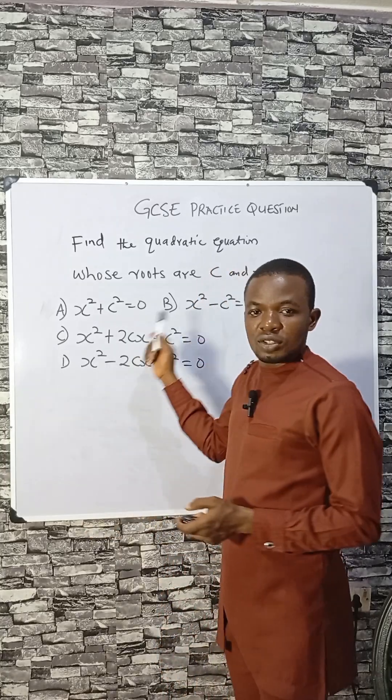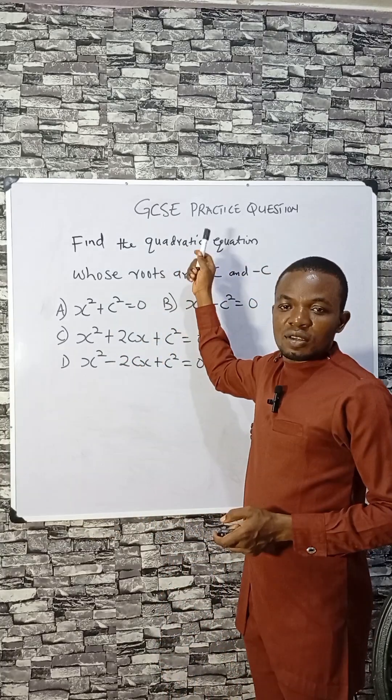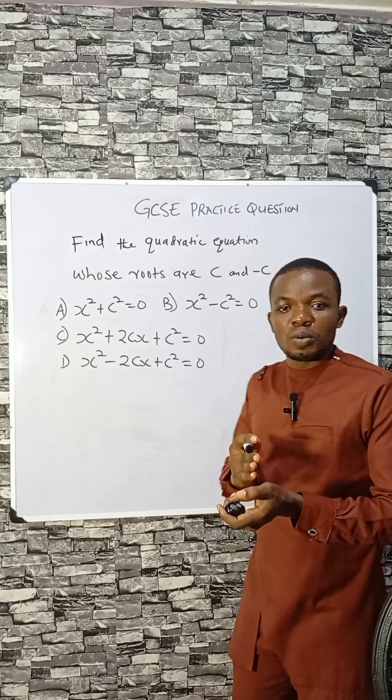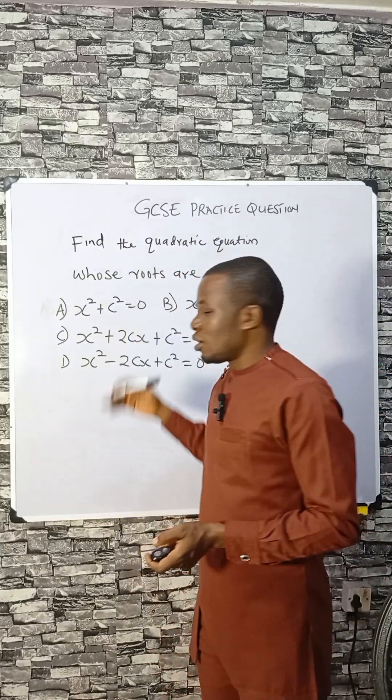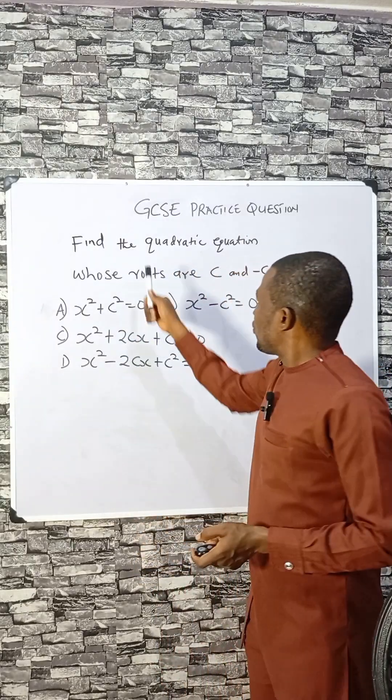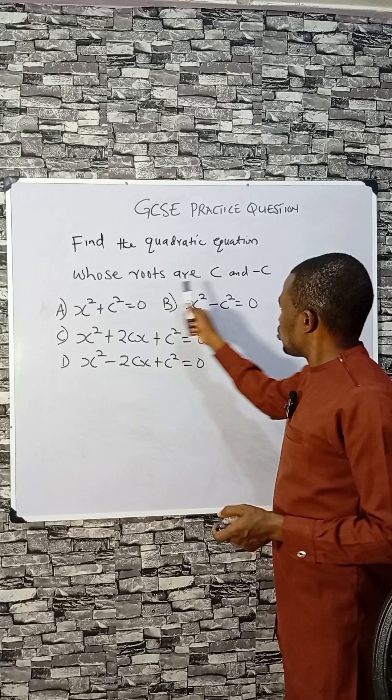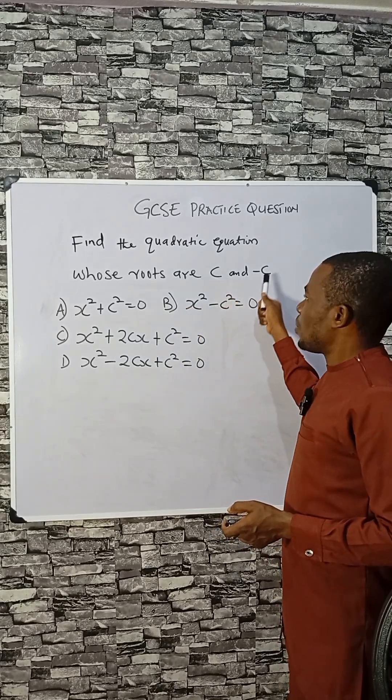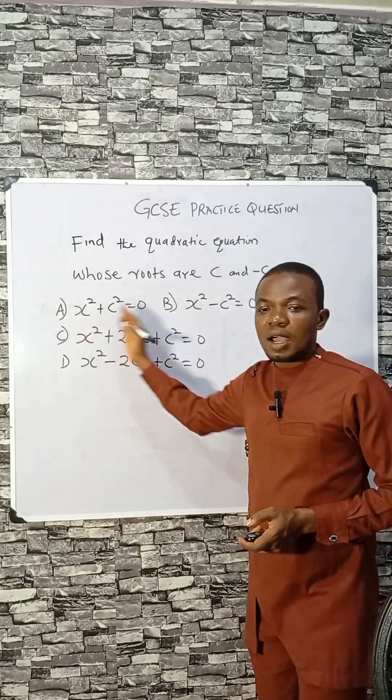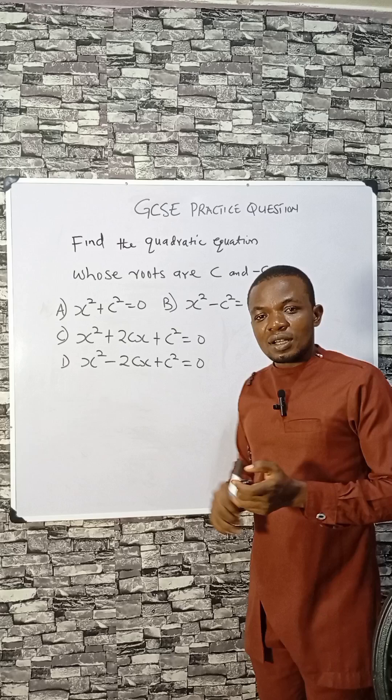Welcome to today's class. Let's study this GCSE practice question. If you're also preparing for SAT, this can also help you. Now, find a quadratic equation whose roots are c and minus c. Here are the options.